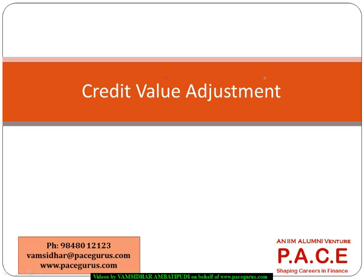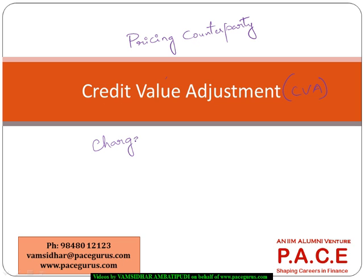Credit Value Adjustment, or CVA, is one of the important calculations with respect to pricing counterparty risk. When we talk about pricing counterparty risk, it is the further risk associated with the counterparty assuming some probability of default — what should be the additional charge levied based on the knowledge that this particular counterparty can default?